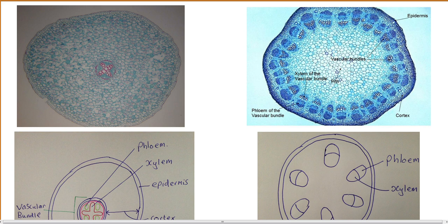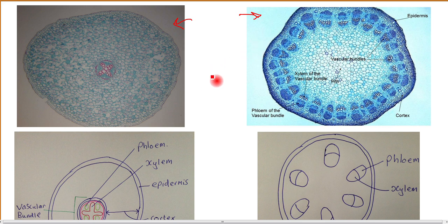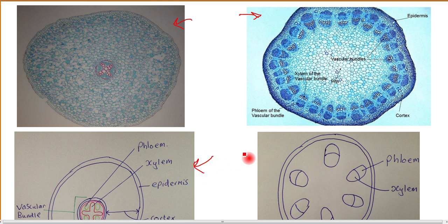The upper diagrams are microscope images of a root and a stem. The one on the left is of a root and the one on the right is of a stem. You need to be able to identify various structures from microscope images, and you also have to be able to draw and label structures through a stem and a root — that's what I've got drawn underneath the microscope images. We'll come to those drawings in a moment.